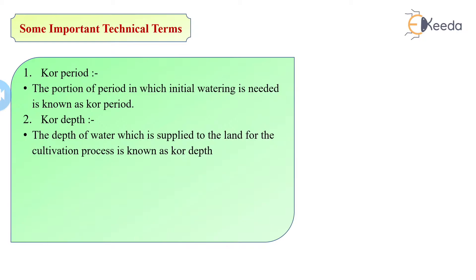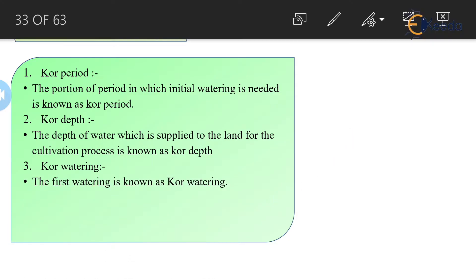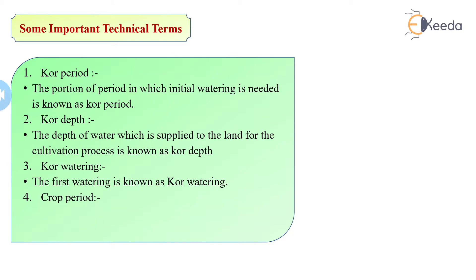Core depth is like delta — it means the total depth of water which is supplied to the land for the cultivation process. Core watering is the initial watering which is supplied to the crop.